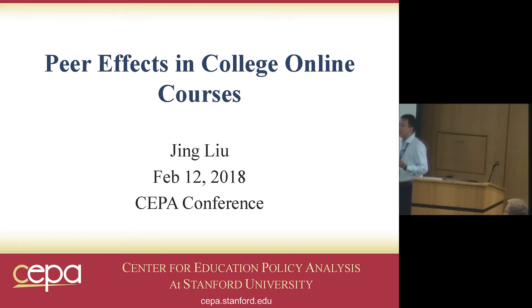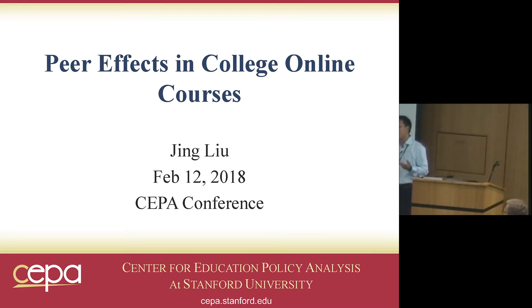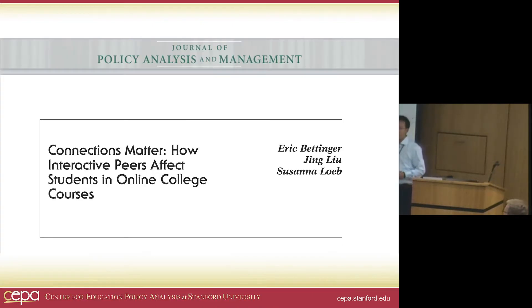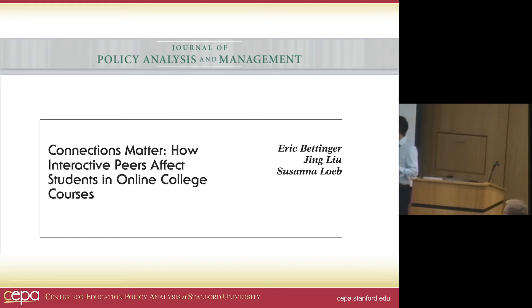This work grows out of a collaboration between SIPA and a very large for-profit university. This paper was already published a year ago. It's called "Connections Matter: How Interactive Peers Affect Students in Online College Courses," and it's joint work with Eric Bellinger and Sonata Loeb.